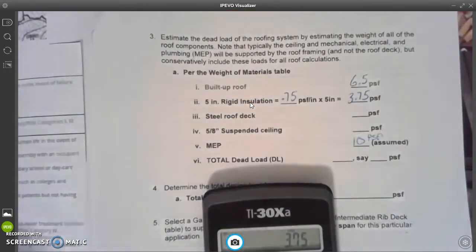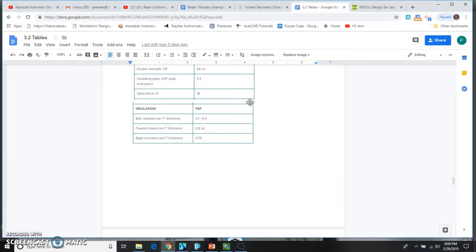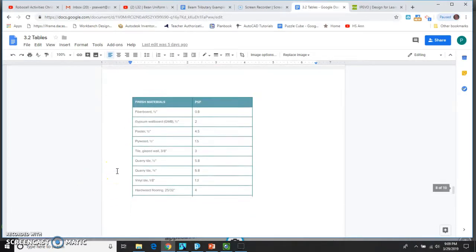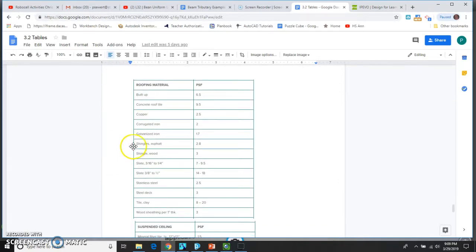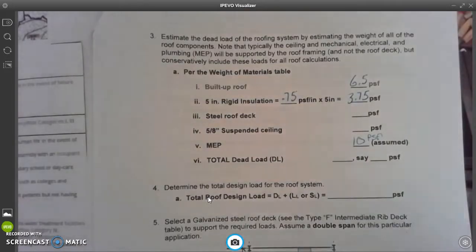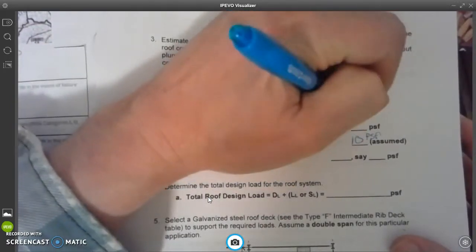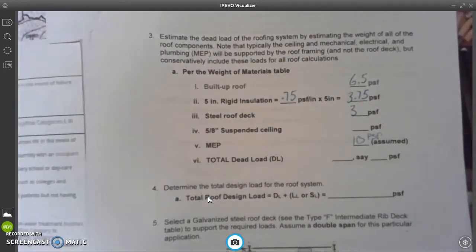Next, steel roof deck. So I'll alt-tab, and this is roof, so I think roof was down here. Here we go. And we've got all the materials here. Don't mix up stainless steel with steel. There's steel deck, and that's a value of 3. So steel roof deck is going to be a 3.